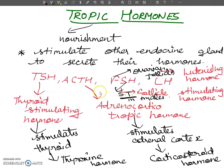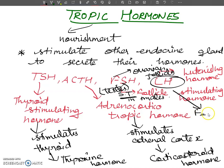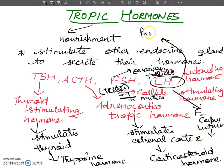Luteinizing hormone has different roles in females and males. In females, LH stimulates the formation of the corpus luteum, which produces a hormone called progesterone.